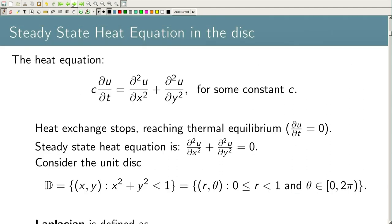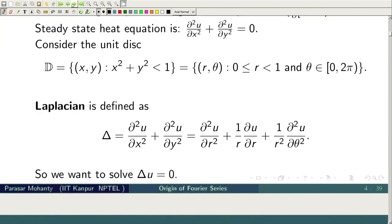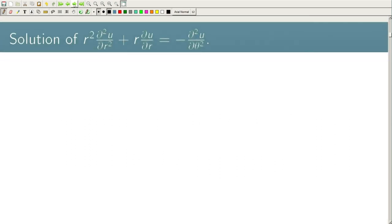The steady state heat equation means Δu = 0. In polar coordinates, this gives ∂²u/∂r² + (1/r)∂u/∂r = −(1/r²)∂²u/∂θ². Multiplying both sides by r² gives us the equation we want to solve. We attempt to solve this by separation of variables.